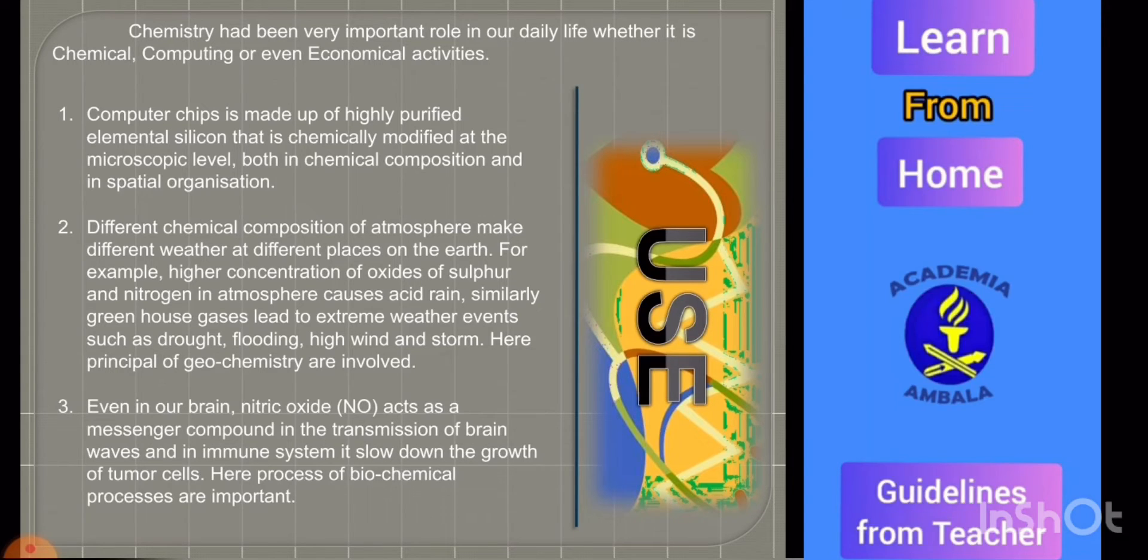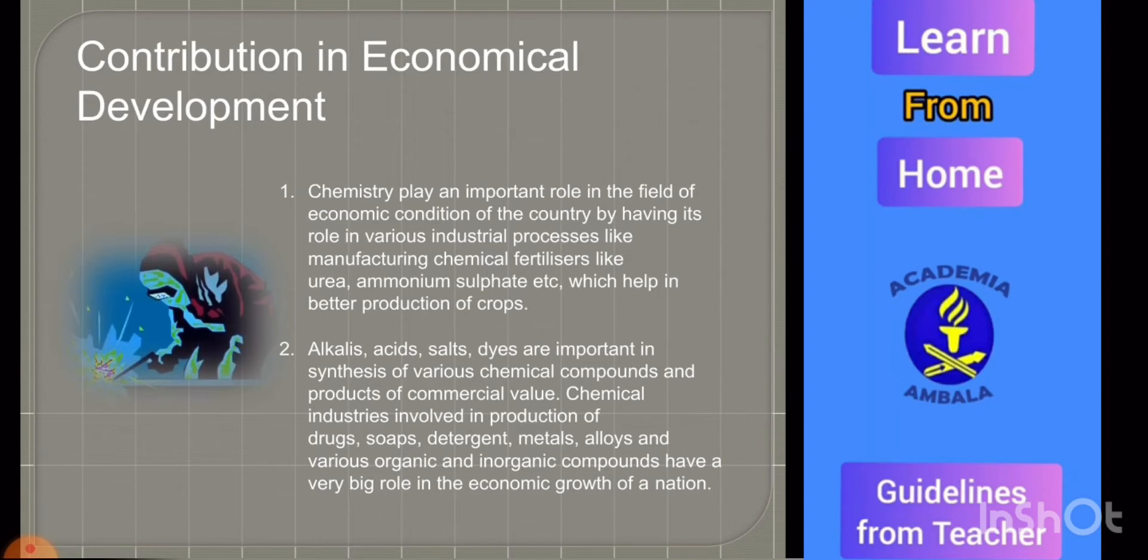Similarly, role of chemistry in economical development: chemistry plays an important role in the economic condition of the country because of its role in various industries like manufacturing of fertilizers, insecticides which help in better crop production and ultimately increase the economy of the country. Similarly, chemical industries involved in the production of drugs, soaps, metals, alloys play a big role in economic growth of the nation.